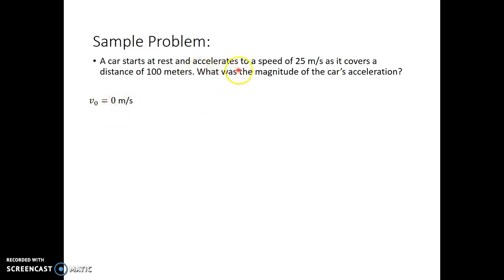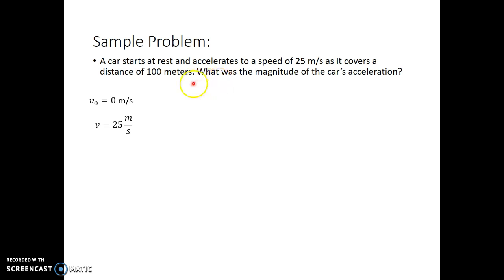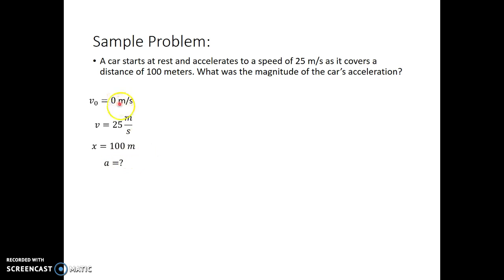It accelerates to a speed of 25 meters per second — that's going to be my final velocity, 25 meters per second — as it covers a distance of 100 meters. That distance is how far it traveled, so I give that x equals 100 meters; it traveled 100 meters in the x direction. What was the magnitude of the car's acceleration? I write that the acceleration is unknown. So these are the four variables I'm interested in.